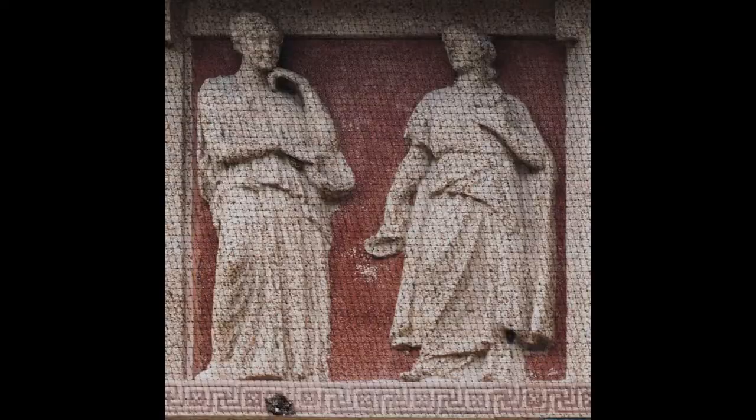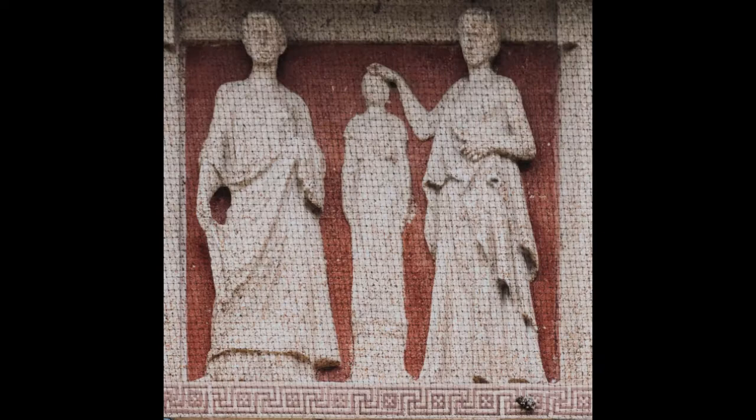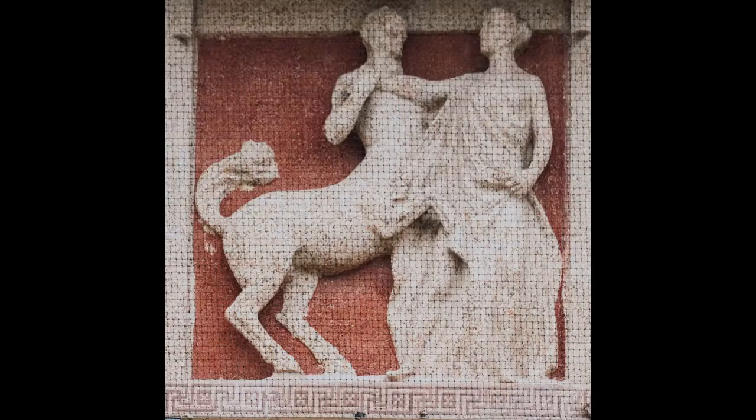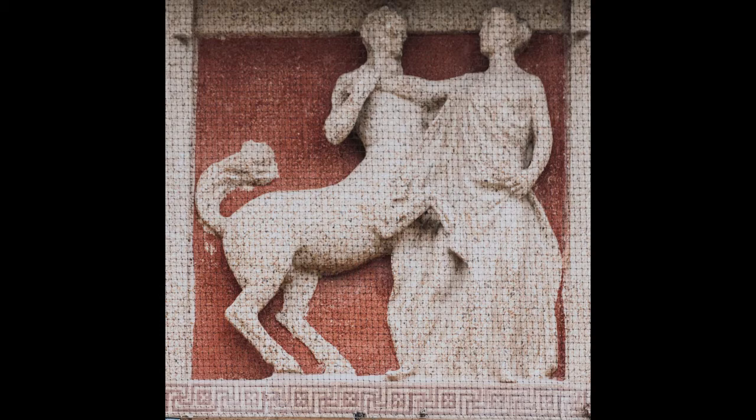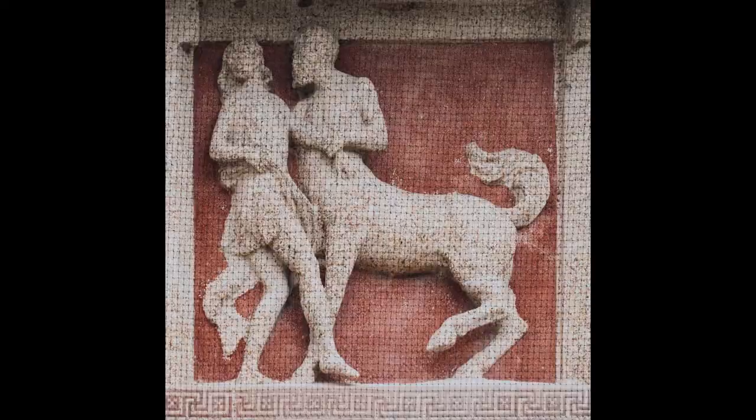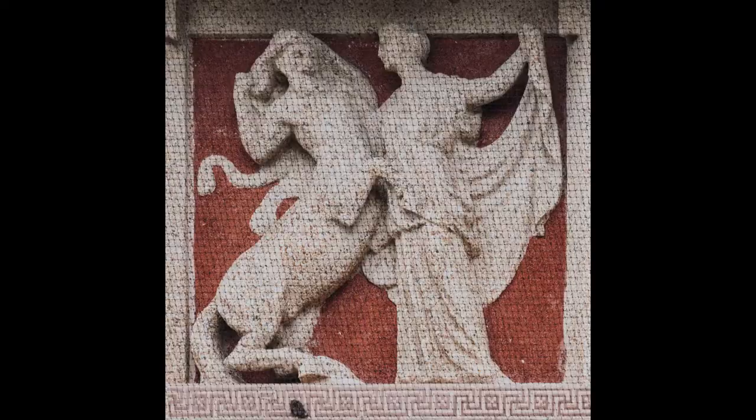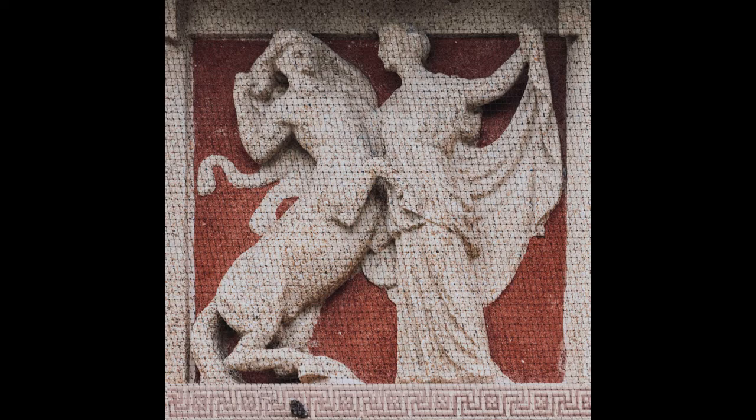They are shown as very calm and reasonable while the centaurs are shown as chaotic and uncivilized, crashing a wedding celebration. When you look at this composition, notice the diagonals used for the centaur. Diagonals are often used to convey a sense of movement and unbalance. The Lapith woman, who the centaur is trying to abduct, looks rather calm and balanced by comparison.